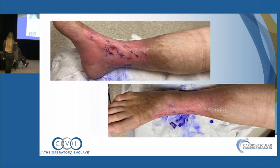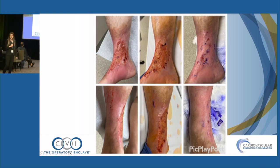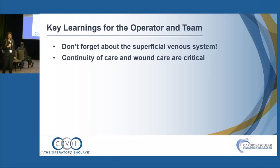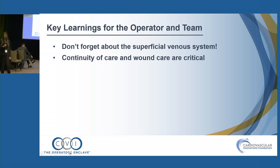She healed up quite nicely — this is after the third treatment of her varithena. Key learning points: everyone is eager to treat the deep venous system, but remember it's all about anatomy and knowing there are two systems. Don't forget about the superficial component. Some patients have complex social situations and comorbidities that make self-care very difficult. Continuity of care and regular wound care are critical for these patients.